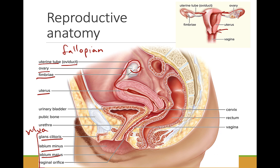The reproductive tract of the ovaries, uterus, and vagina, and the urinary tract are separate. However, the urethra in the penis combines both the urinary and reproductive tracts.